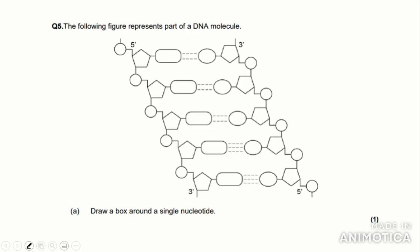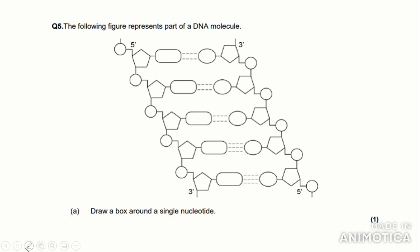Draw a box around a single nucleotide in the diagram. A single nucleotide contains a phosphate group, deoxyribose, and a nitrogenous base. You need to draw a box around all three components to get the mark — it can be any one of the nucleotides shown.